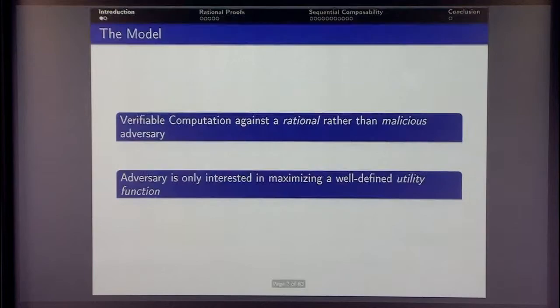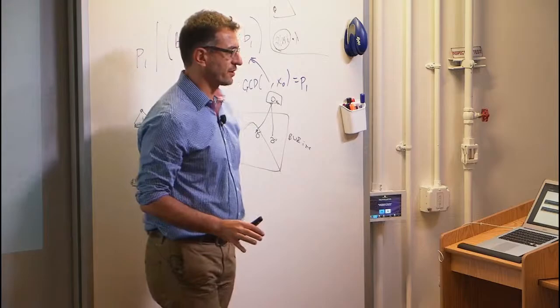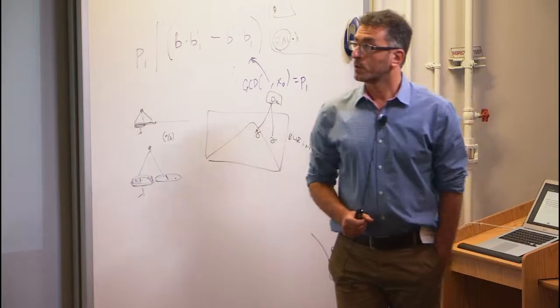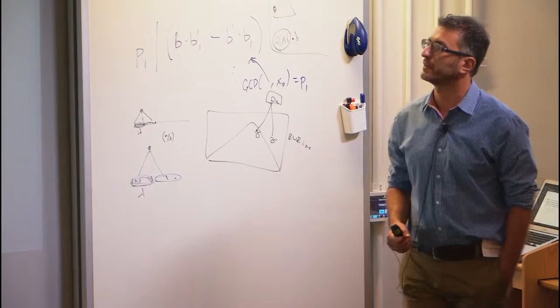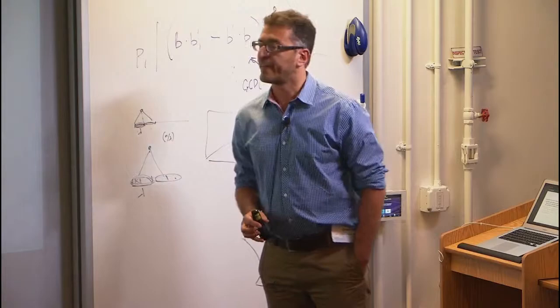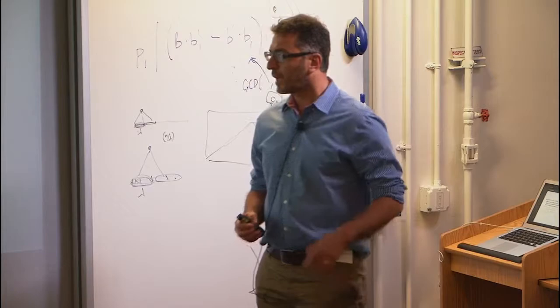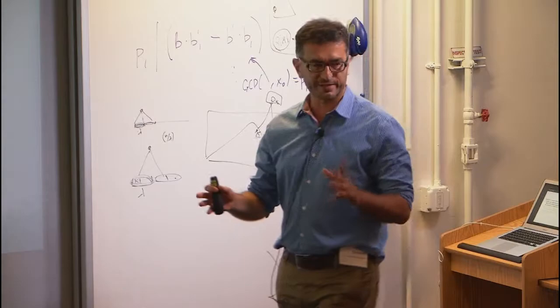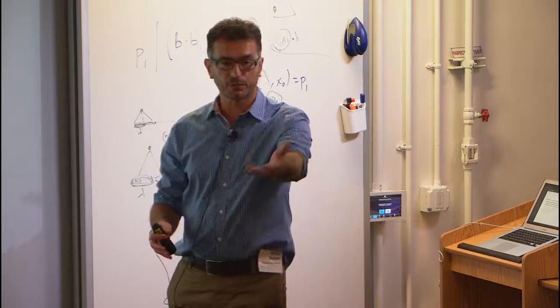Let me tell you what the model is. I'm going to talk about verifiable computation in a model in which the adversary is not malicious, but rather an irrational entity. By that, I mean that the adversary is only interested in maximizing a well-defined utility function that is defined inside the protocol. We started from this notion of rational proof that Silvio Micali and Pablo Azar introduced a couple of years ago, and we sort of extended the model.